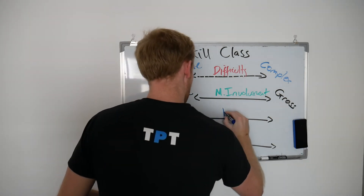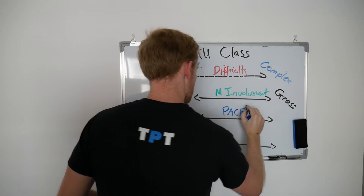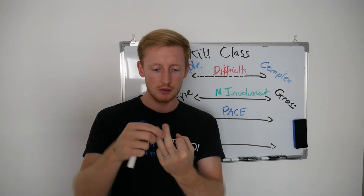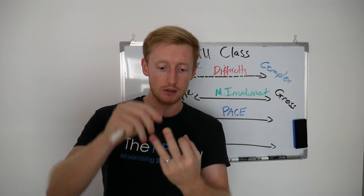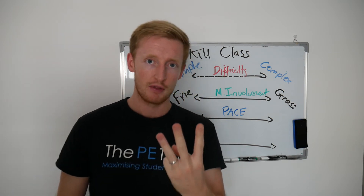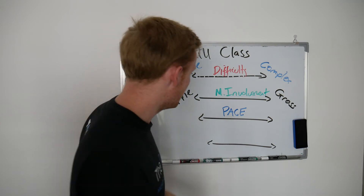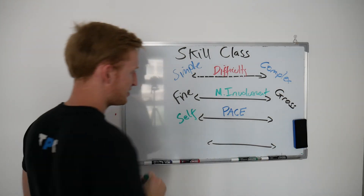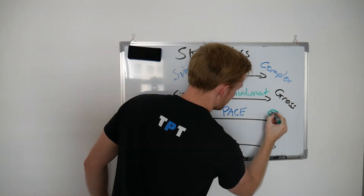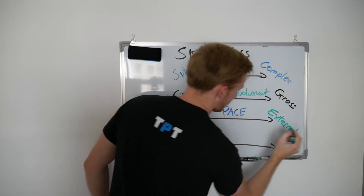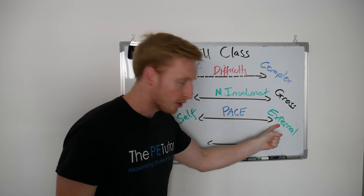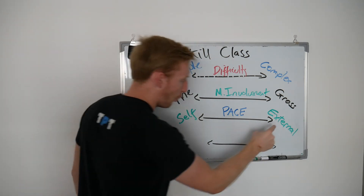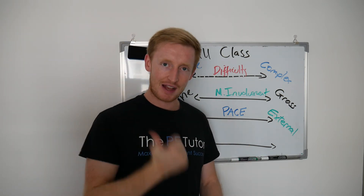The pacing of the skill - so the timings of the skill. There are three parts to this: when we choose to start the skill, how quickly we then choose to complete that skill, and thirdly, when we choose to finish that skill. So: when does it start, how long does it take, when does it finish? It can either be self-paced or externally paced. Who is the most in control - you or external factors? Is the pacing in your control or out of your control?